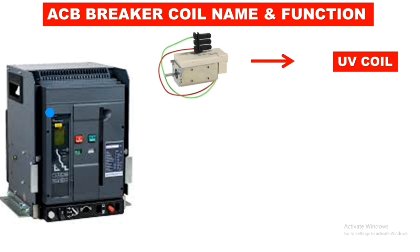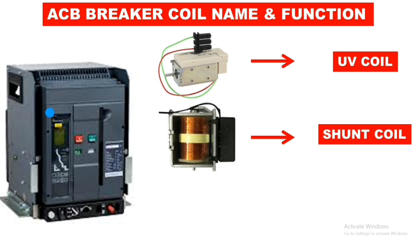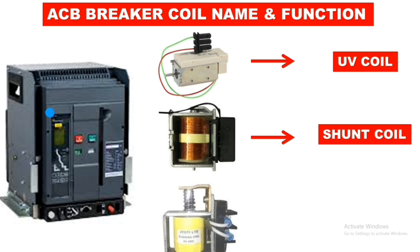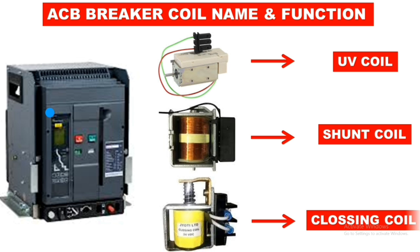The first coil is the under voltage coil, or UV coil. The second coil is the shunt release or shunt coil, and the third coil is the closing release coil, or closing coil. So in an ACB we have a total of three coils. We will learn all coils' functions later in this video.